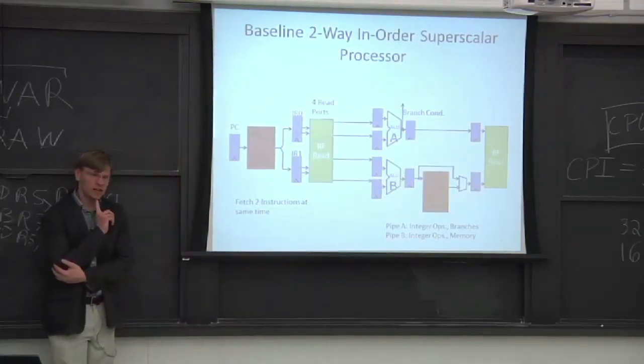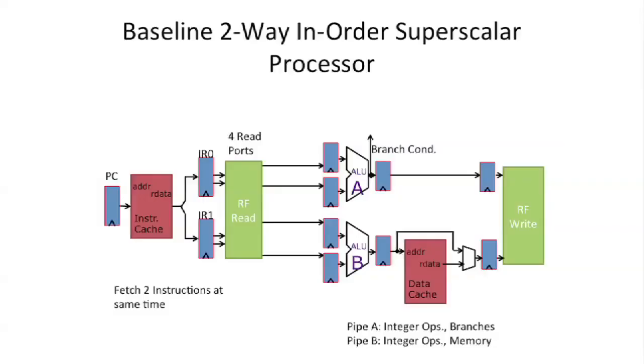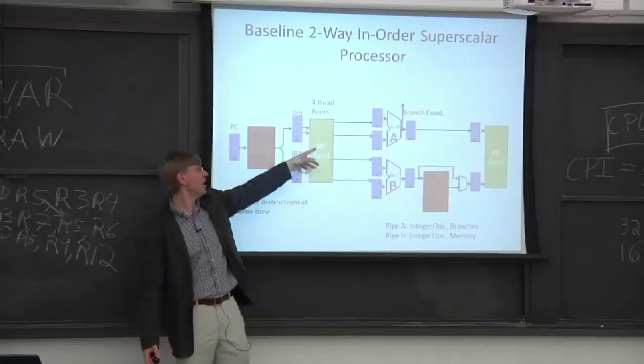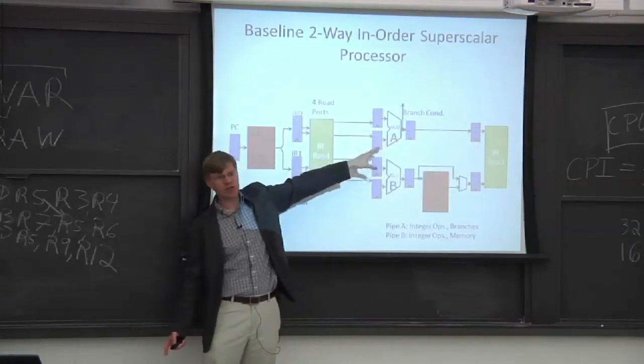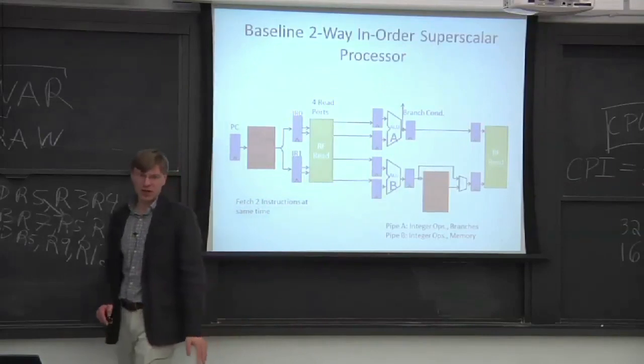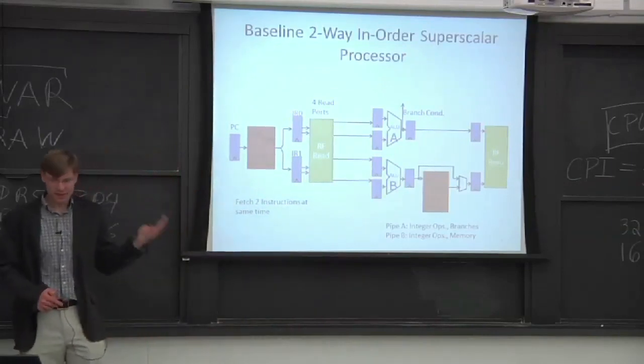We also need to add more ports to our register file. Instead of in our basic pipeline that we had talked about earlier, we had only two read ports. You gave two different addresses and it outputted two registers. Now, because we have two different instructions going at the same time, we actually have to pull out four different read ports or four different read registers at the same time.